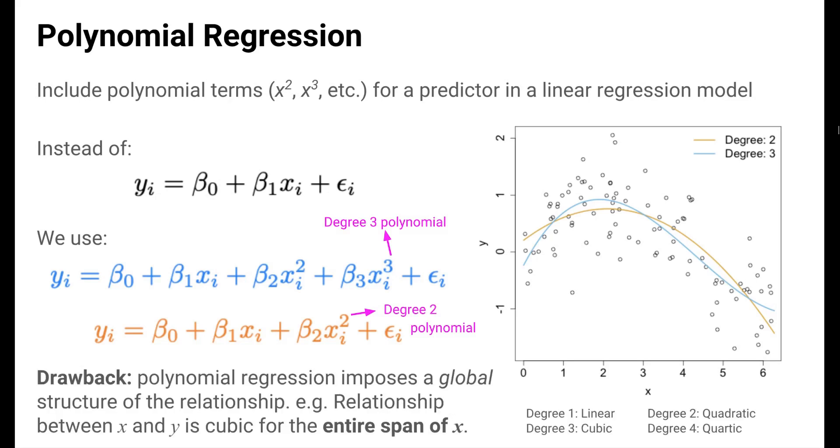Polynomial regression certainly gives us the flexibility to model non-linear relationships, but the drawback is that it imposes a global structure on the relationship between the predictor and the response. What do we mean by global structure? For example, if we use a degree 3 polynomial for the predictor, this global structure is saying that the relationship looks cubic over the entire range of x all the way from 0 to 6. This can be limiting if, for example, the relationship looks cubic from 0 to 3 and linear from 3 to 6. Is there a way to make polynomials in pieces?